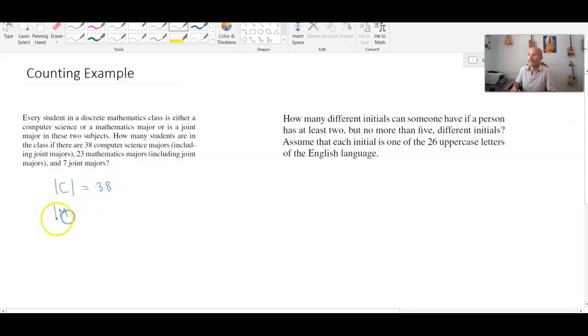The number of mathematics majors, or that's the size of that set, there's gonna be 23 people in there. And the seven joint majors, well that means they're in both, they're simultaneously in both. So the intersection between C and M, I know to be 7.